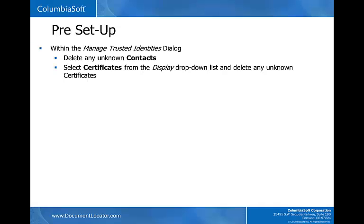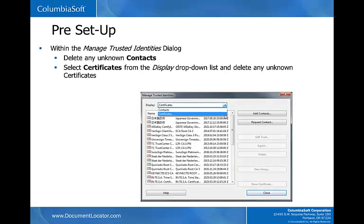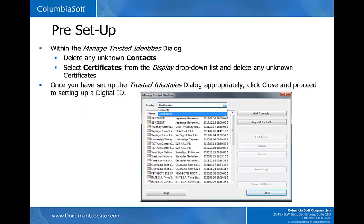Select Certificates from the Display drop-down list and delete any unknown certificates. The purpose of deleting any unknown certificates is the same as mentioned previously for deleting unknown contacts. Once you have set up the Trusted Identities dialog appropriately, click Close and proceed to setting up a digital ID.